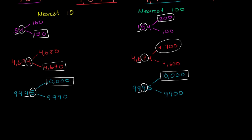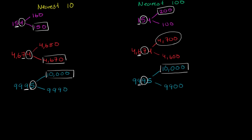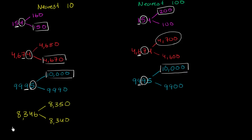Now we have one more: 8,346. The multiple of 10 below it is 8,340, and the multiple of 10 above it is 8,350. If we're going to round to the nearest 10, we look at the ones place. The ones place is 5 or greater, so we round up to 8,350.